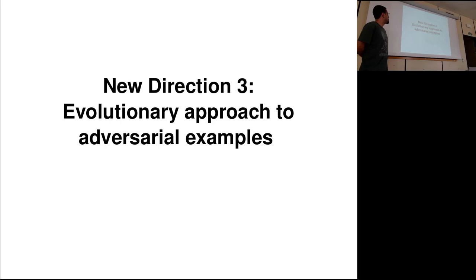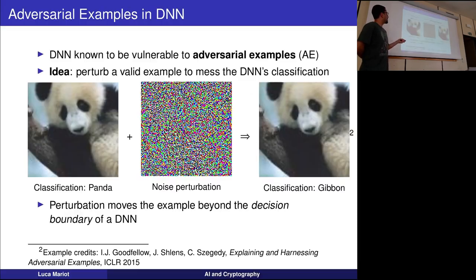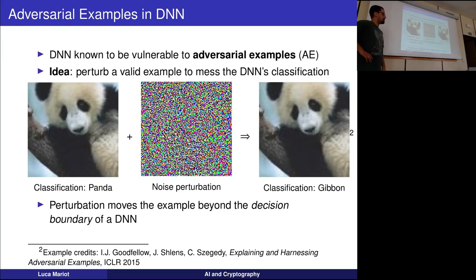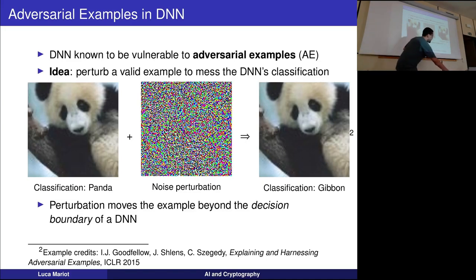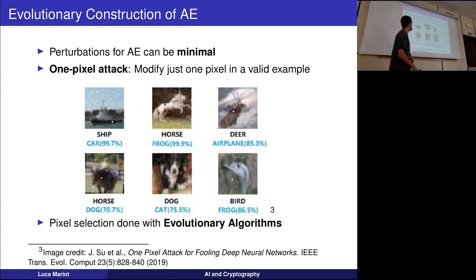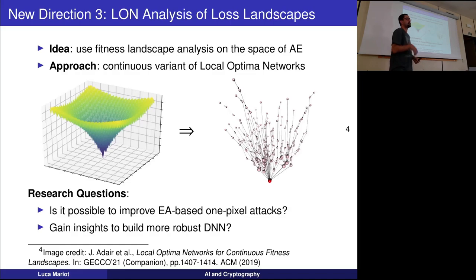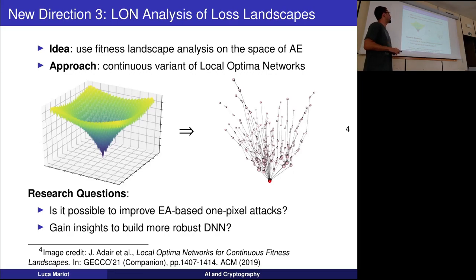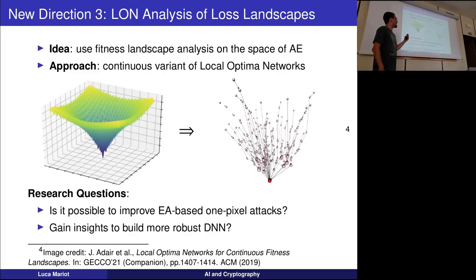For the third direction — something I thought about a couple of years ago — we have the problem of adversarial examples in a deep neural network, which we already saw in the third lecture. One of the possibilities is using evolutionary algorithms, such as the one-pixel attack, to construct adversarial examples. One of the things I wanted to explore is the concept of fitness landscape analysis from evolutionary algorithms, applied to analyze the space of adversarial examples, to understand why these evolutionary algorithms are so successful.